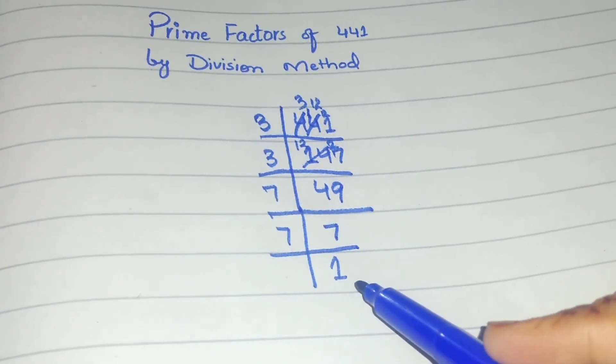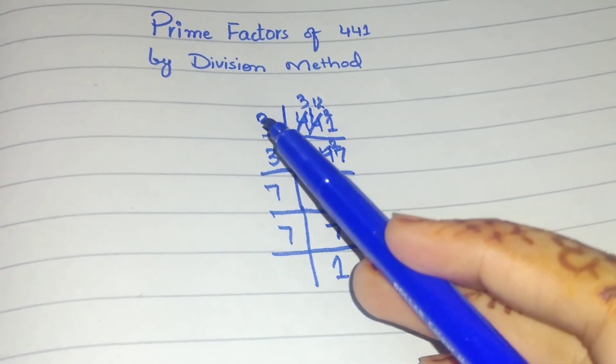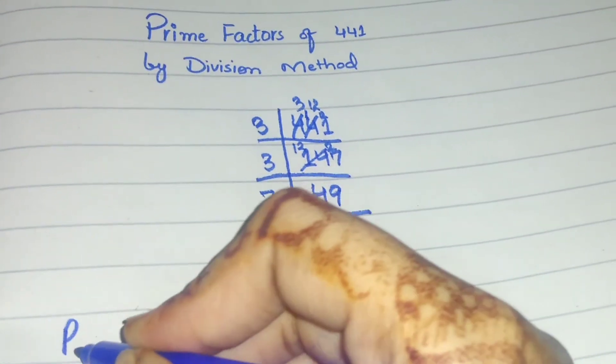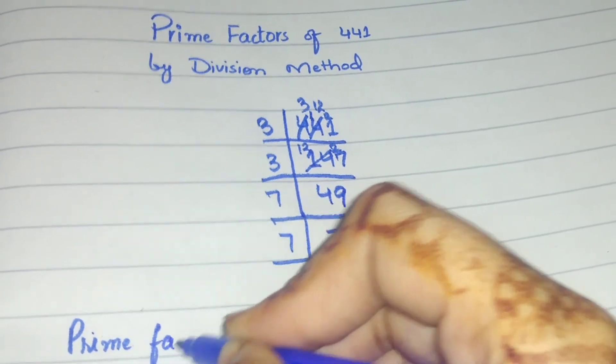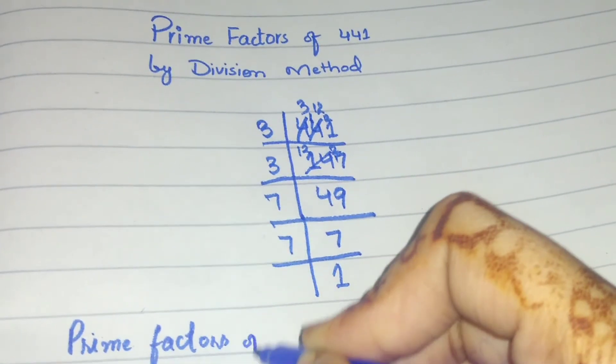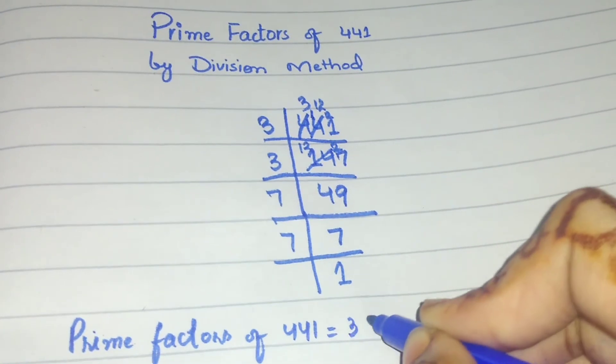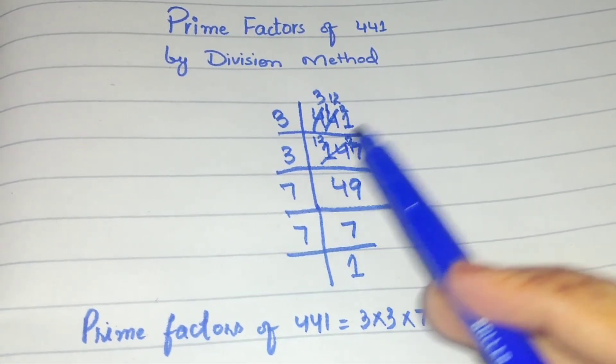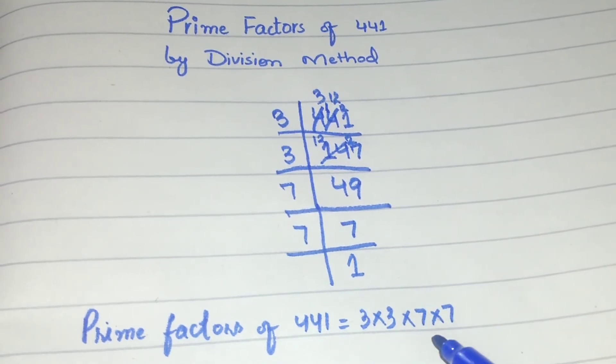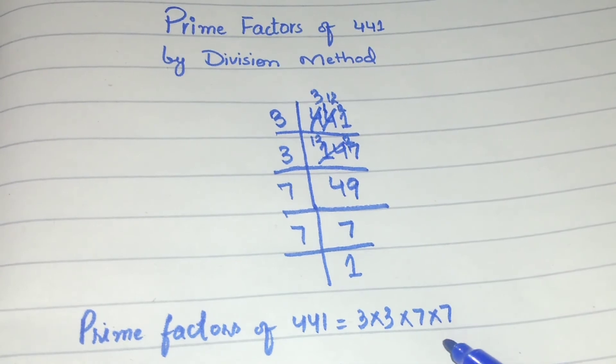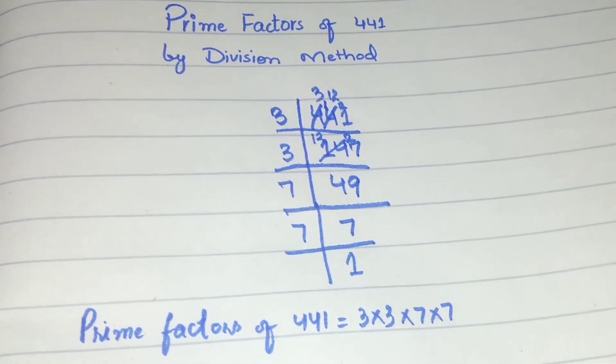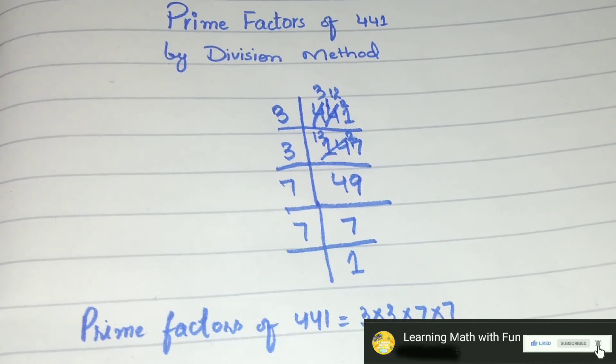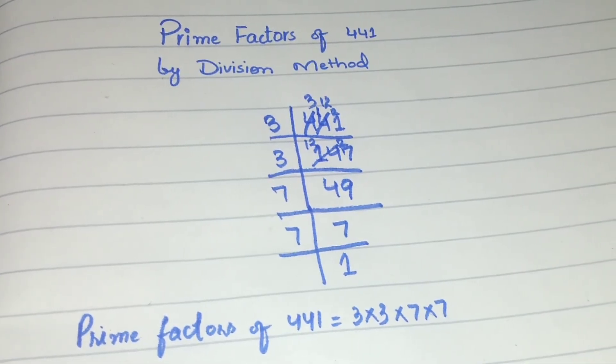These are the prime factors of 441. We write them as: Prime factors of 441 = 3 × 3 × 7 × 7. If we multiply all of them, we get our original number 441. I hope you have understood the video. If you like it, please share and subscribe to my channel. Allah hafiz.